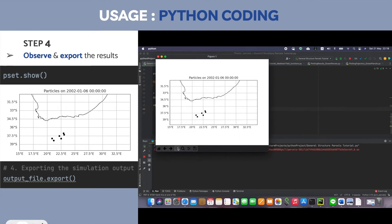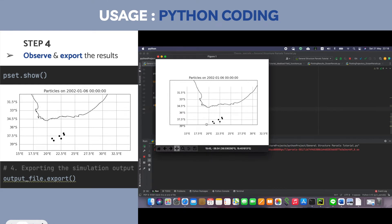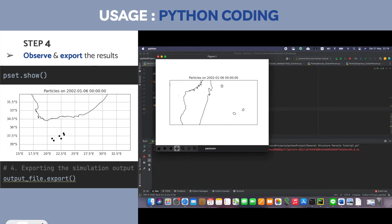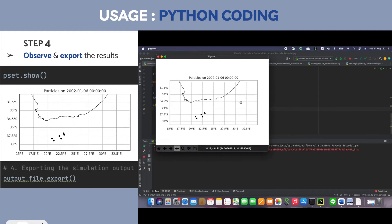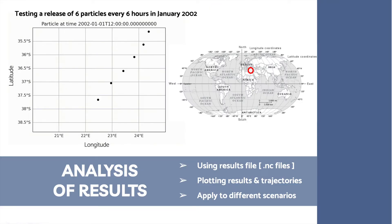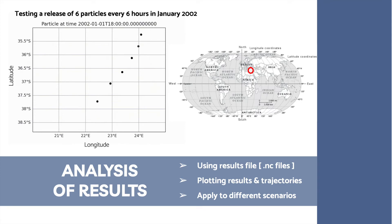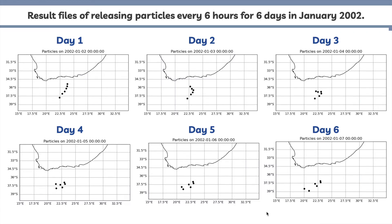This is how it looks in Python when you run it. The FieldSet you created is basically a map embedded with variables. If you drag it around you can see other parts of the map, though the program shows only the area for which you input data. From your result file you can do many things — in this example it's a distribution animation, testing the release of six particles every six hours in January 2002. You can output snapshot results or create animations showing how particles move from day one to day six.